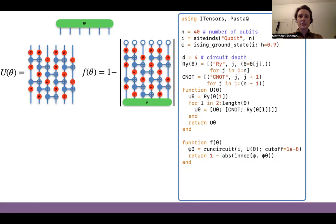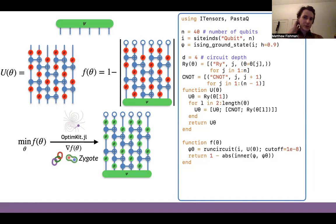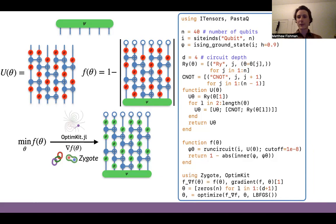We define a circuit U(θ) and a cost function where we apply the circuit to a zero state and try to maximize the overlap with the wave function we want to prepare. After optimization, when we find the optimal gate angles, this quantum circuit can be implemented on our quantum computer to prepare the wave function of interest. This is the cost function defined in PastaQ. To do this optimization we use Julia packages such as OptimKit, ChainRules, and Zygote — ChainRules and Zygote take the gradient of the cost function with respect to the gate angles, and OptimKit does gradient-based optimization using those gradients.